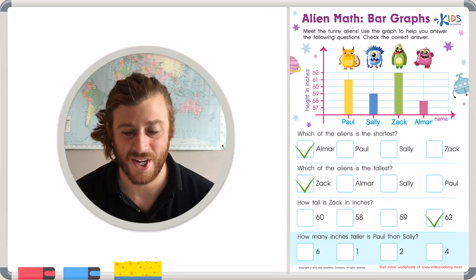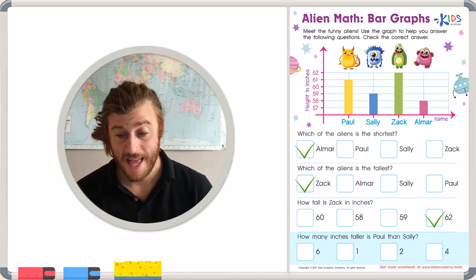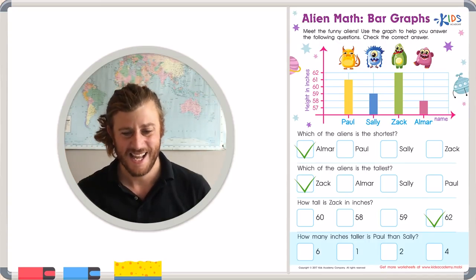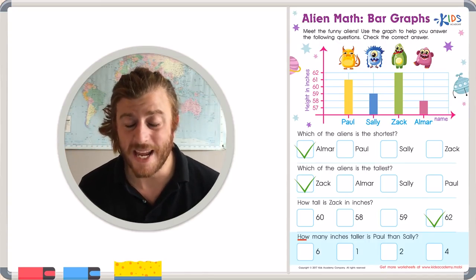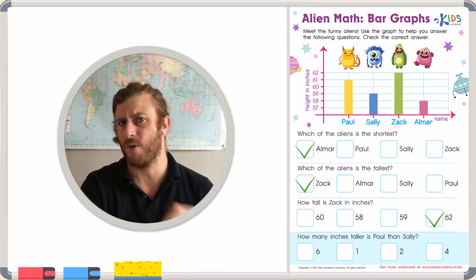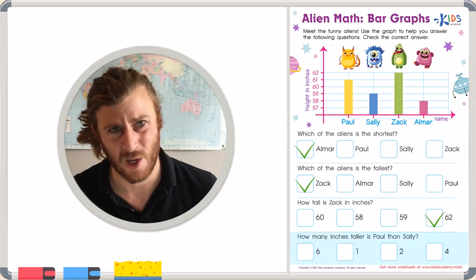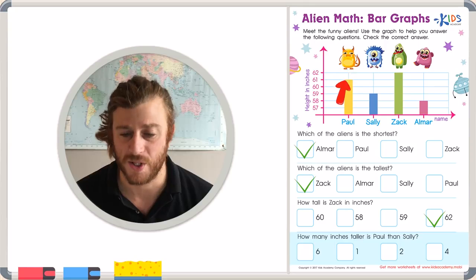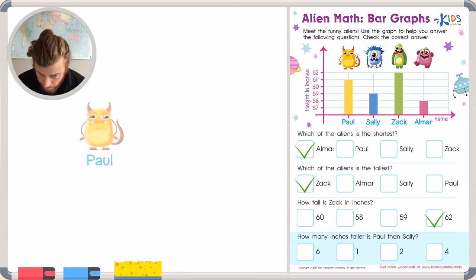Our final question asked us to compare two different aliens. He wants us to compare Paul and Sally. And the question says, how many inches taller is Paul than Sally? I want to show you two different ways to answer this question. I hope they're both really easy for you. First, let's look at Paul and see how tall Paul is. Paul is exactly 61 inches tall. So I'm going to write that down just to remind myself. Paul is 61 inches tall.